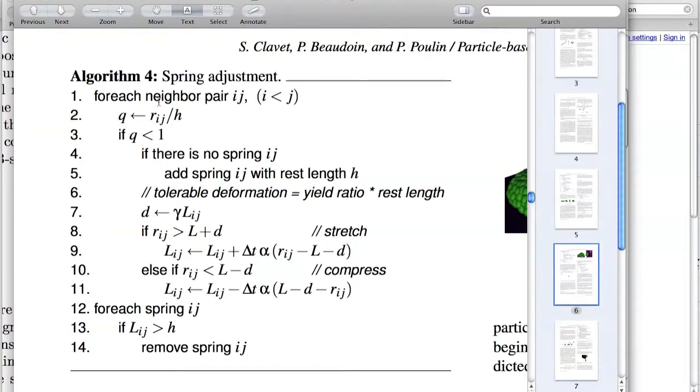But the rest of the fluid simulator was working fine, so I decided that it was probably this area that was wrong. So I read through this. For each neighbor pair ij, where i is less than j, you set q to the distance between the two particles over the kernel radius.